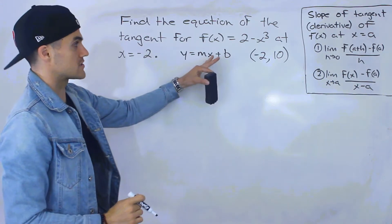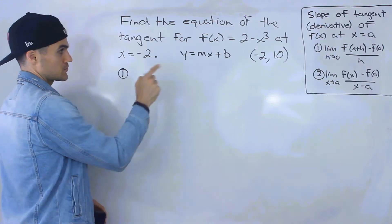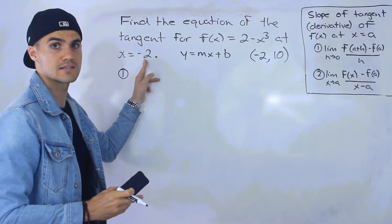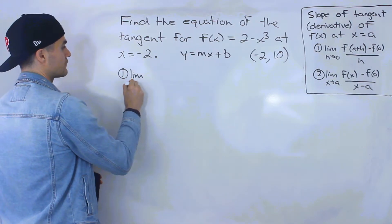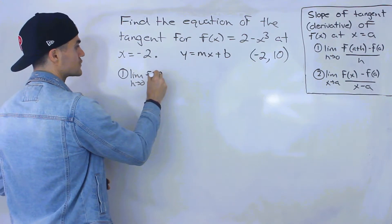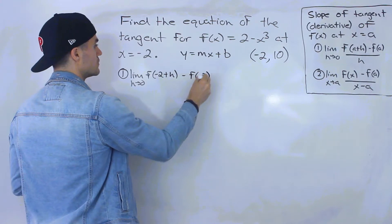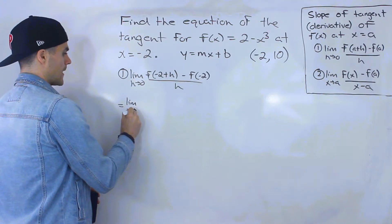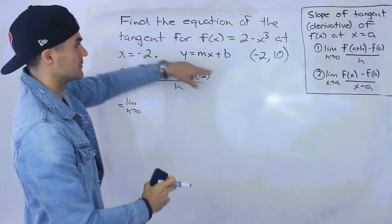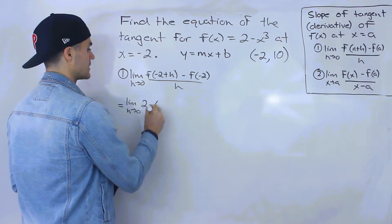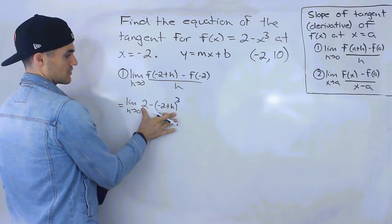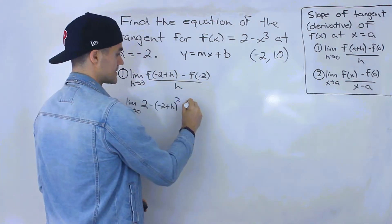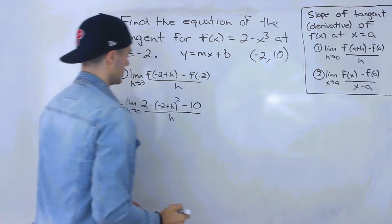Now let's find the slope — and I'm going to find it in two ways. Using the first definition, we've got the limit as h approaches 0 of f(a+h) minus f(a) all over h, where the a value is negative 2. So I'll have f of negative 2 plus h minus f of negative 2, all over h. For f of negative 2 plus h, we plug in that expression for x, giving us 2 minus (negative 2 plus h) to the power of 3.